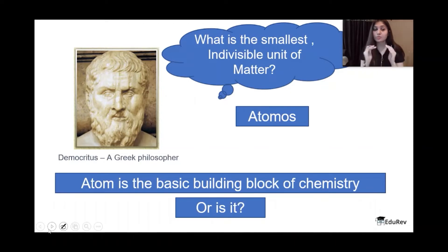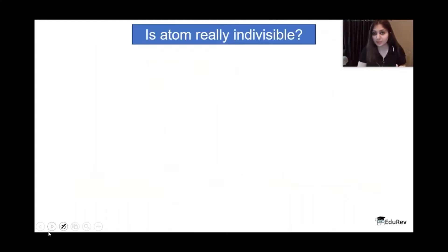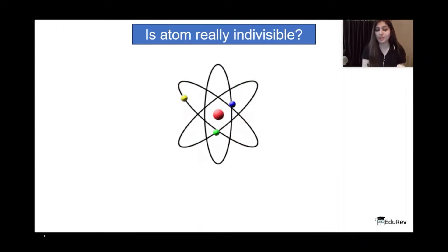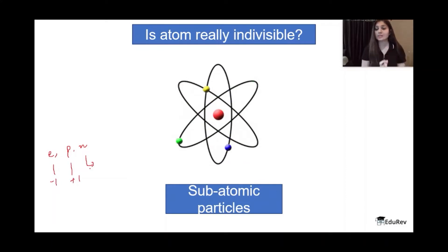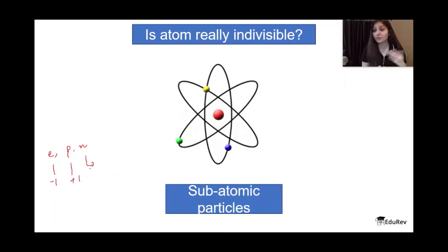But is it? Because today, after all the research in science, we know that an atom is actually not indivisible — it is very much divisible into not one but three subatomic particles, which everybody knows: electrons, protons, and neutrons. Electron has a charge of −1, proton has a charge of +1, and neutron is a neutral species. In higher classes you will know that atoms are actually further divisible into things called quarks, but let's leave that for another day.